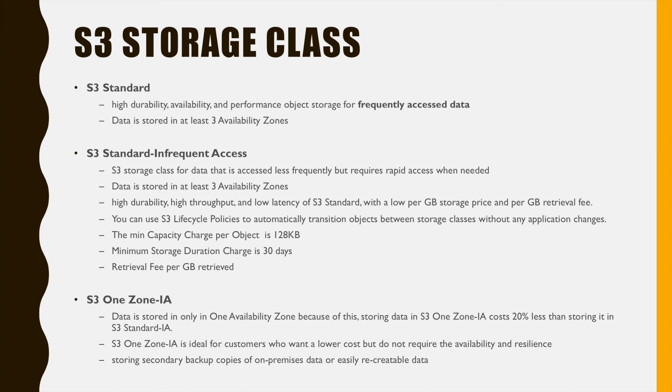Standard IA has a lower per-GB storage price and low per-GB retrieval fees. It is designed for lower availability — 99.9% — whereas Standard is 99.99%. The minimum capacity charge per object is 128 KB, so even if your object is only 10 KB, you will pay for 128 KB. Also, the minimum duration is 30 days, so you should not use it if you only need to store data for 10 days.